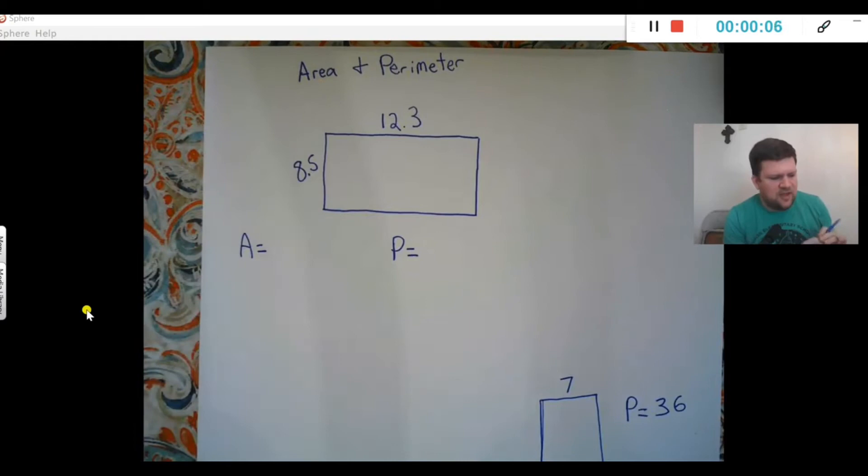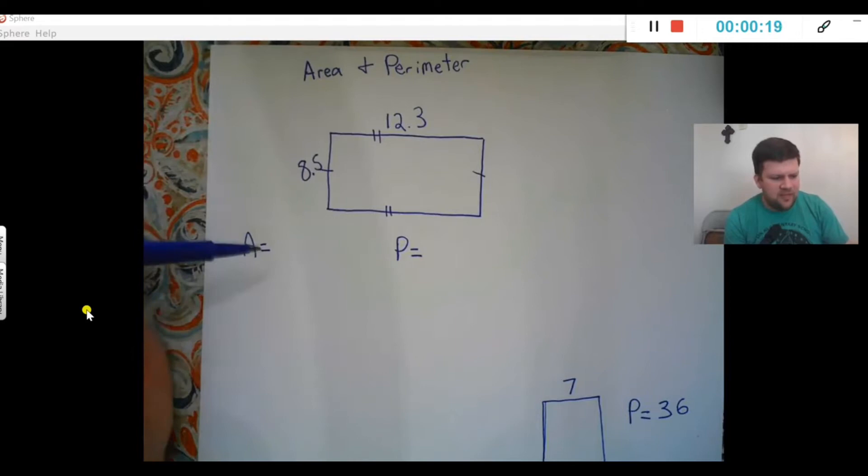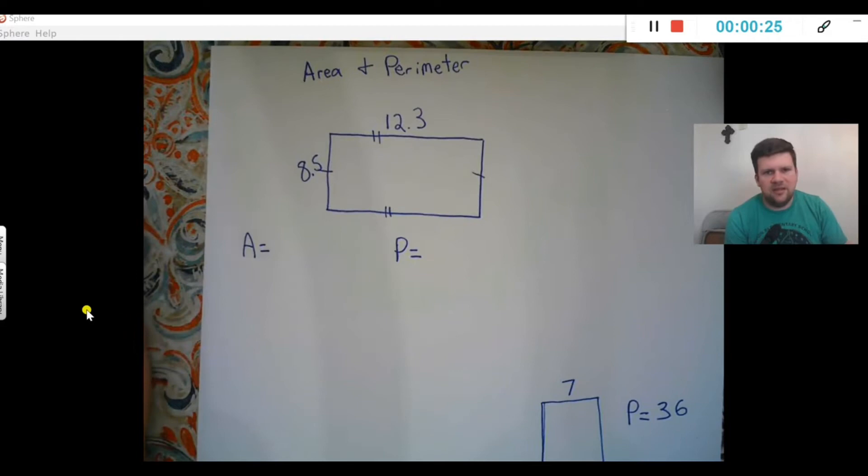Okay guys, I'm giving you a quick review on what we do to find perimeter and area. I've got a rectangle here, meaning that these sides are parallel and the same length, and these two sides are parallel and the same length. I need to find the area and the perimeter, so first thing I need is the formulas.